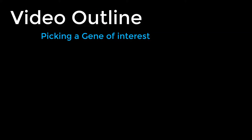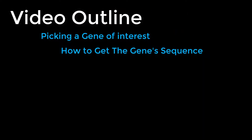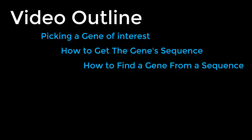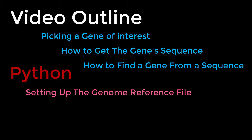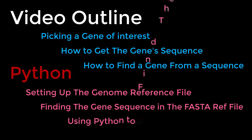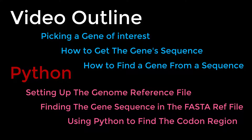Here's a little outline on how this video is gonna go: we're gonna start by picking a gene, then we're gonna find that specific gene's sequence. We'll also cover finding a gene if you just have a sequence. Then we're gonna move on to coding in Python — setting up our genome reference file, finding that gene in it, taking our gene sequence to find where it's located in the FASTA file, and using the coding region to separate the pieces of the gene that actually code the protein.